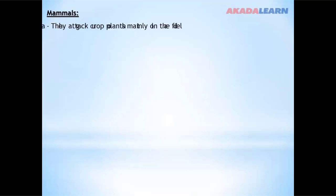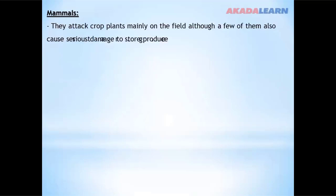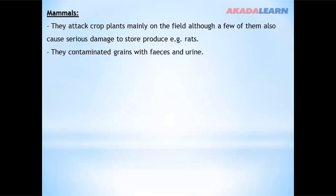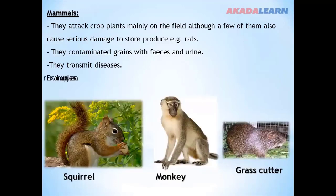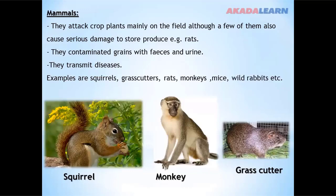Mammals attack crop plants mainly on the field, although a few of them also cause serious damage to stored produce. For example, rats contaminate grains with feces and urine and transmit diseases. Examples of mammal crop pests are squirrels, grass cutters, rats, monkeys, mice, and wild rabbits.